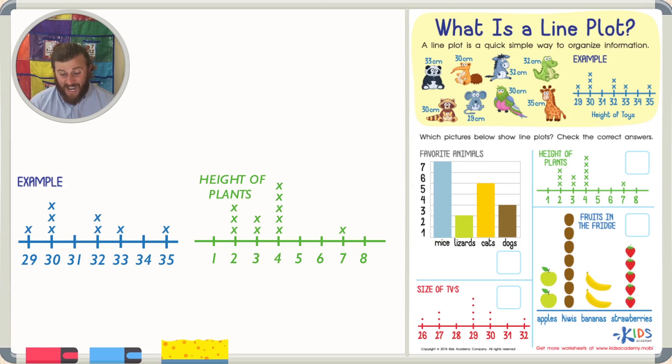So this tells me that for heights of the plants, there are three plants that are two, there are also two plants that are three. This is the same kind of information that we got from our line plot in the example, so I think that this picture is a line plot. Let's go ahead and check it.